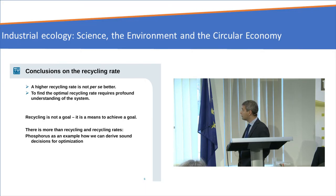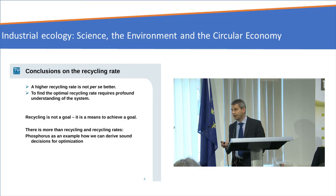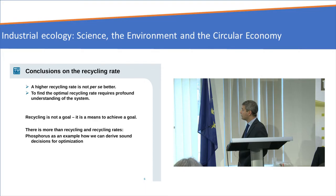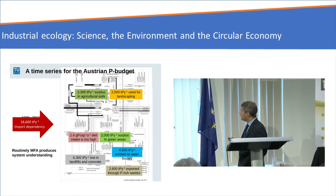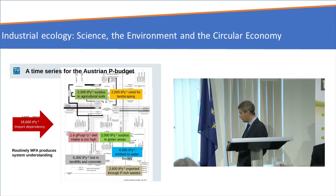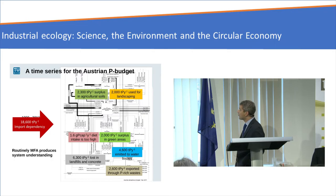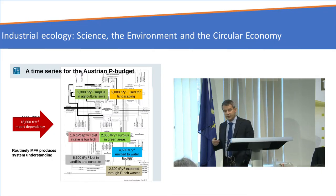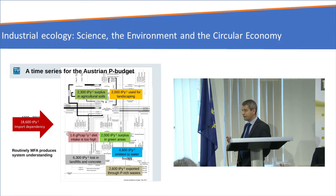I selected phosphorus in Austria because Austria is quite close to my office, and phosphorus because it's a critical resource — it cannot be substituted, and the EU also classified it as a critical resource. This is the Austrian phosphorus system, and of course it's too complex to discuss in detail here. But we have quite good understanding of the phosphorus budgets in Austria. We did it not only for one year but produced a time series from 1990 to 2013, and this time series produced a lot of system understanding.